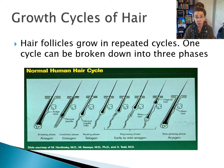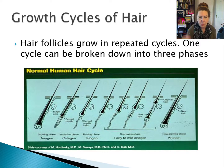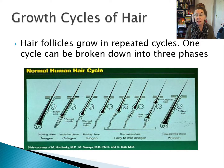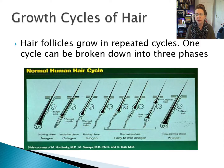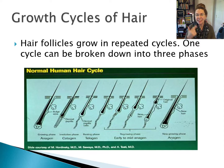Let's talk a little bit about the growth cycles of the hair. Hair actually grows in cycles. Hair follicles grow in these repeated cycles, and one hair cycle can be broken down into three phases: anagen, catagen, and telogen.